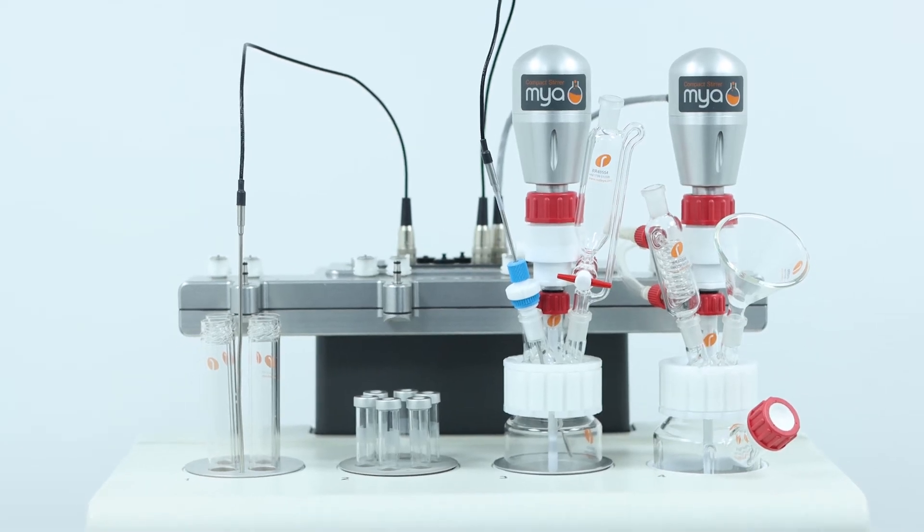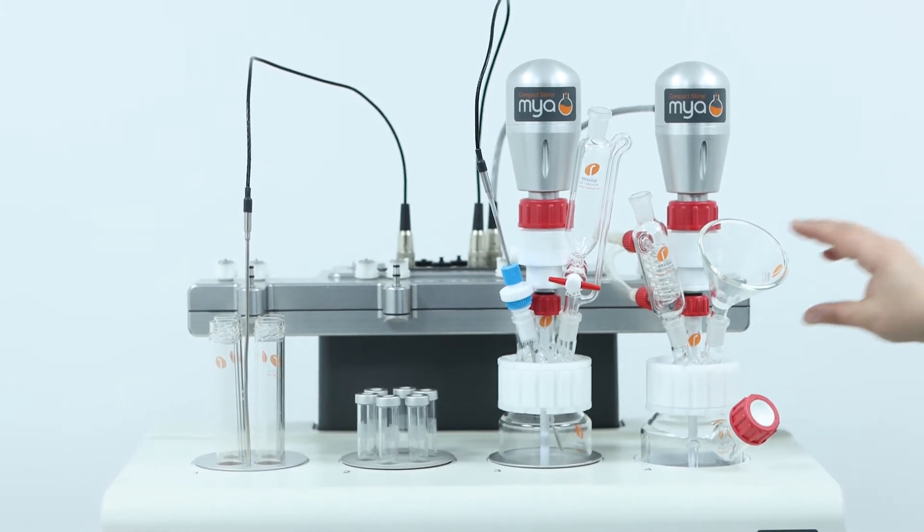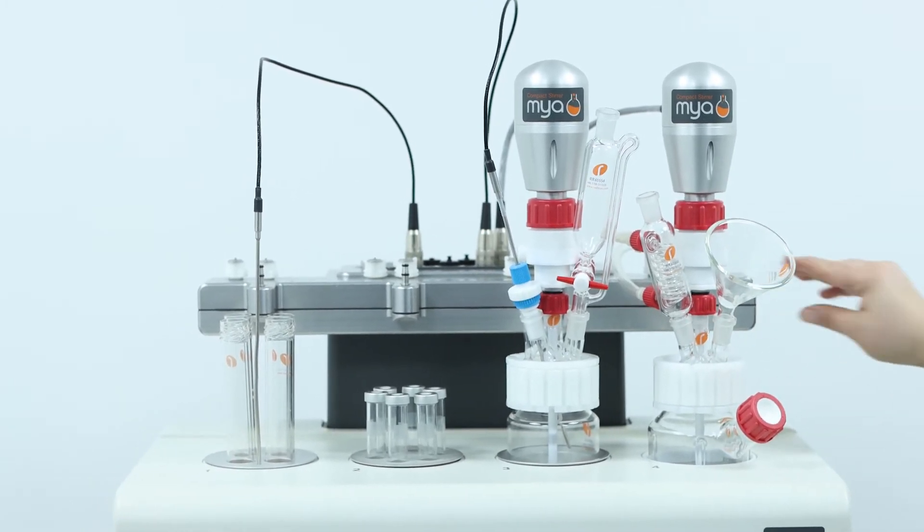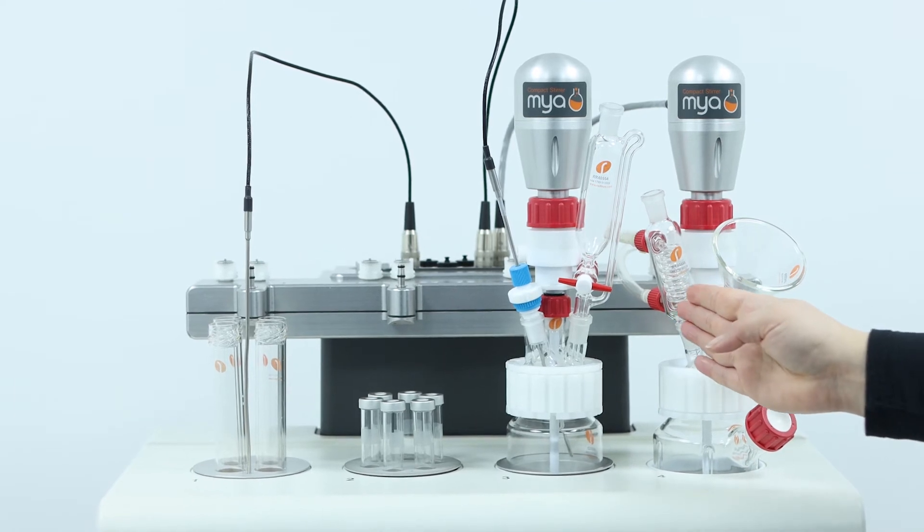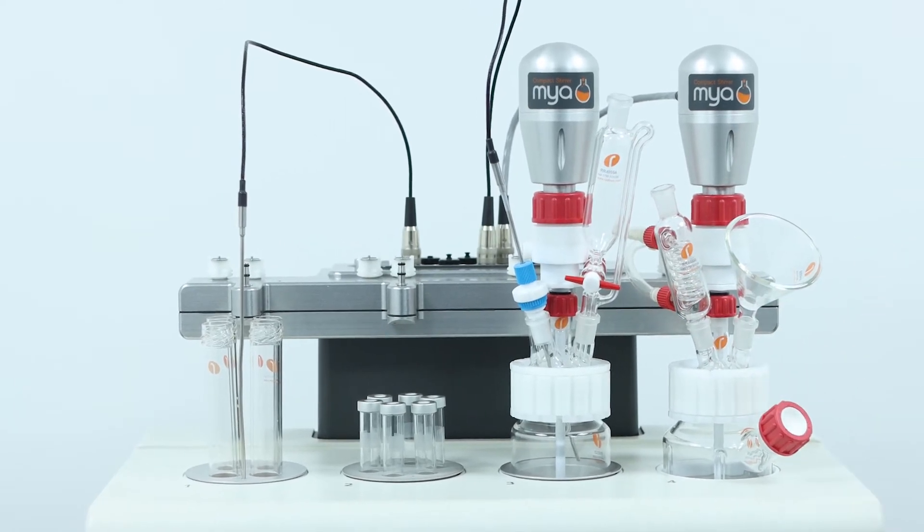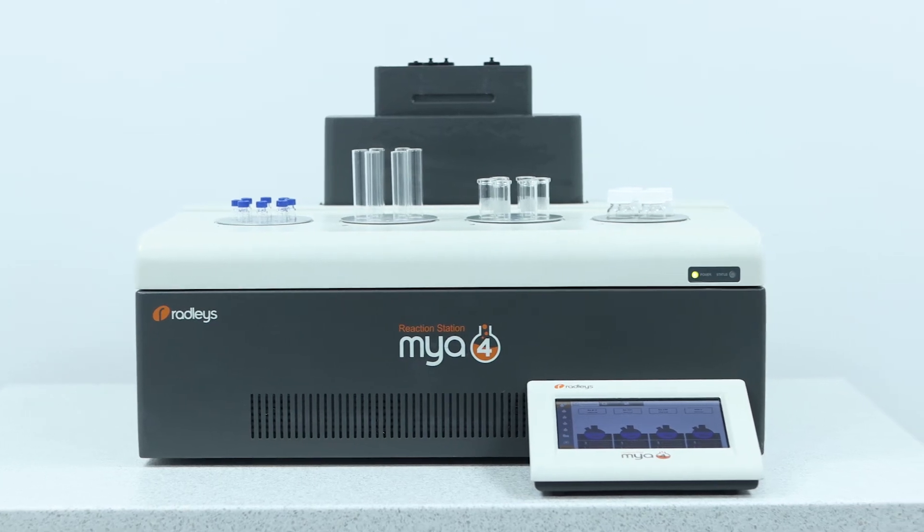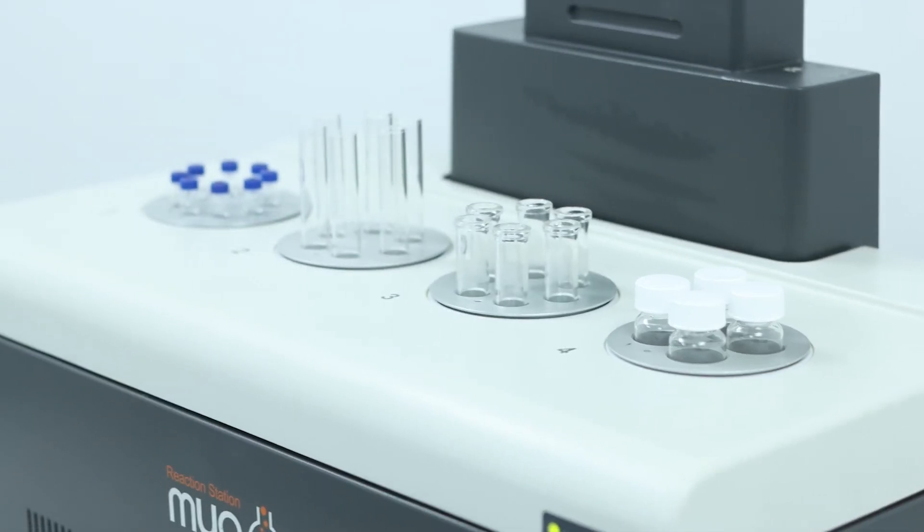As you can see here, the vial inserts are used in the presence of a manifold head. The head is used to provide refluxing and inerting when using vessels and flasks. The refluxing and inerting capabilities don't apply to the multi-position tube inserts.